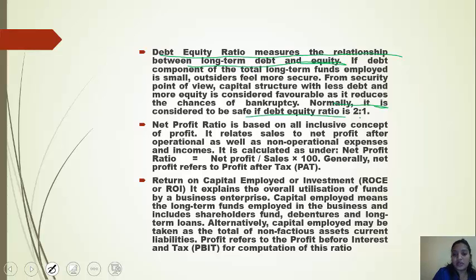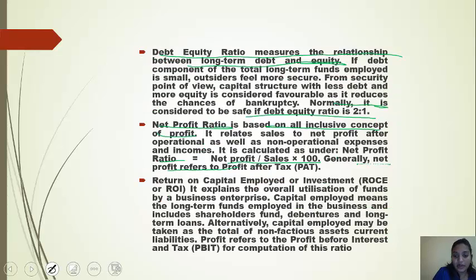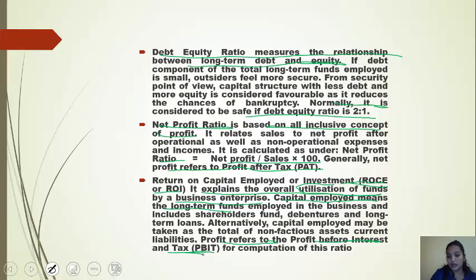The normal debt-equity ratio is 2:1. Net profit ratio is based on an inclusive concept of profit and the ratio is net profit to sales multiplied by 100; net profit generally refers to profit after tax. Return on capital employed (ROCE) or return on investment (ROI) explains the overall utilization of funds by the business enterprise. Capital employed means the long-term funds, and profit refers to profit before interest and tax (PBIT) for computation of these ratios.